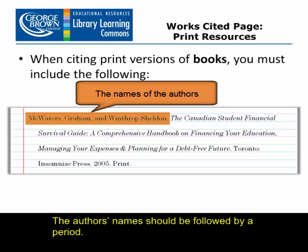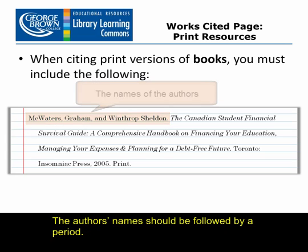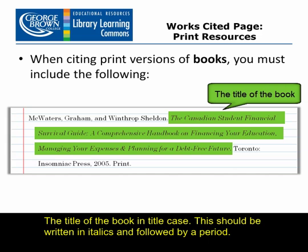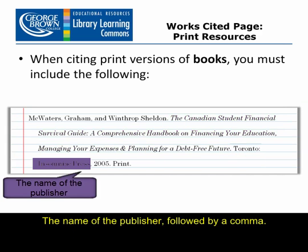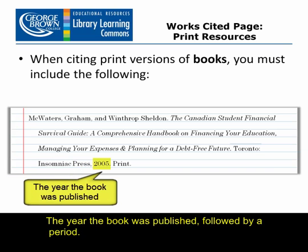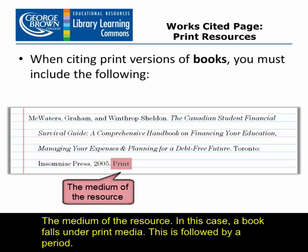The authors' names should be followed by a period. The title of the book in title case — this should be written in italics and followed by a period. The place the book was published, followed by a colon. The name of the publisher, followed by a comma. The year the book was published, followed by a period. And the medium of the resource — in this case, a book falls under print media, followed by a period.